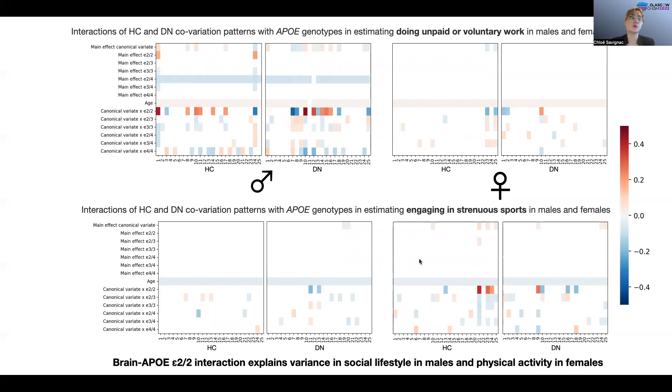In females, we also see interaction with E2E2, but this time with the canonical variates for engaging in strenuous sports, which is a measure of a modifiable cardiovascular risk factor. So it seems as if social engagement is particularly important to males in modifying the protectiveness of E2, while engaging in sport is particularly important to females.